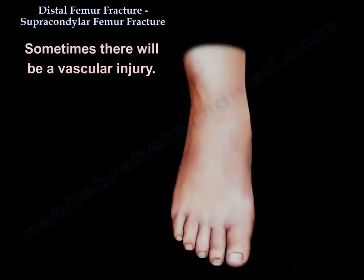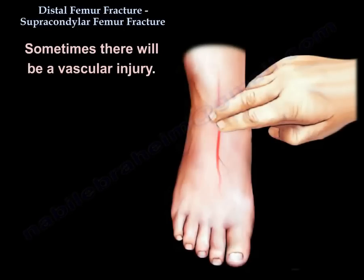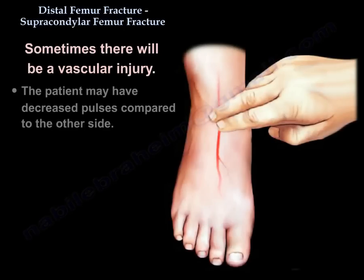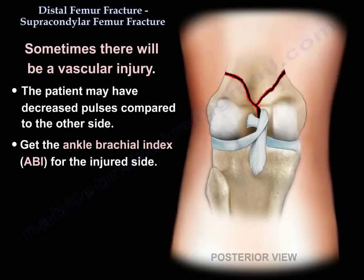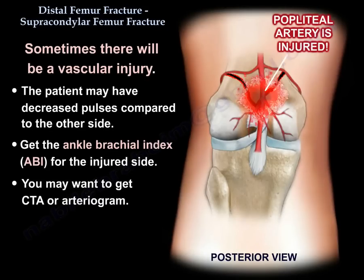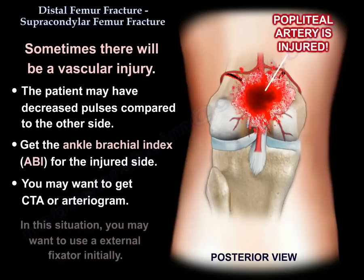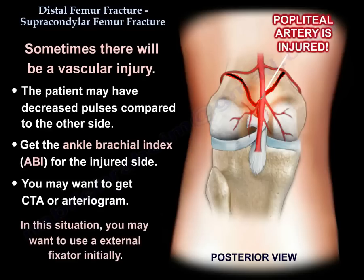Sometimes there will be a vascular injury and the patient may have decreased pulses compared to the other side. You can get an ABI and you may want to get a CTA or arteriogram. In this situation you may want to use external fixation initially.